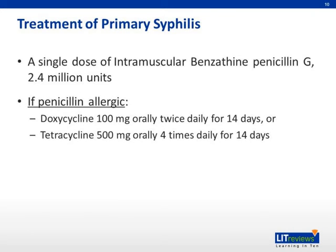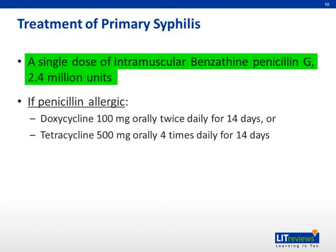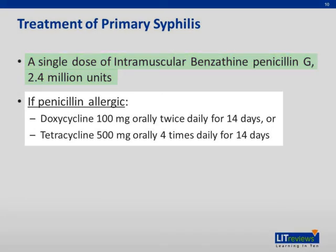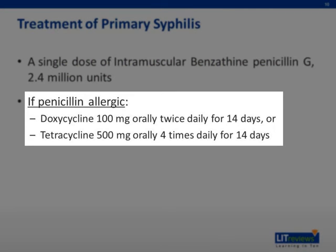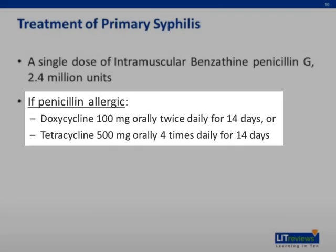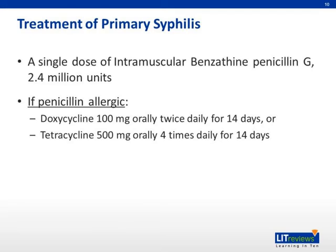Therapy for primary syphilis is benzathine penicillin G 2.4 million units intramuscularly in a single dose. If the patient is allergic to penicillin, doxycycline 100 milligrams orally twice daily for 14 days, or tetracycline 500 milligrams orally four times daily for 14 days are the alternatives. Of note, penicillin-allergic patients with syphilis and HIV whose compliance cannot be ensured should be desensitized and treated with penicillin. All patients who have syphilis should be tested for HIV infection, and consider screening patients with syphilis for other STDs based on risk.